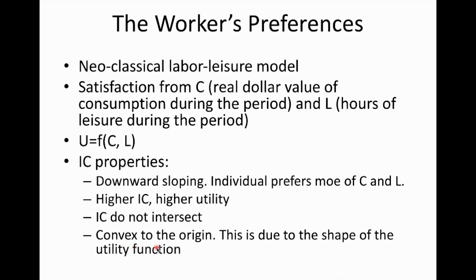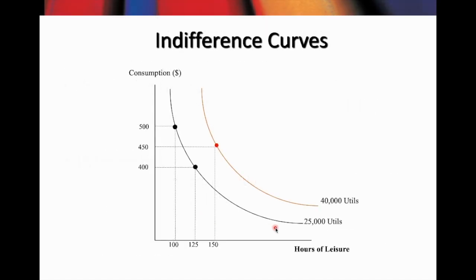The shape of the indifference curve is convex to the origin, due to the shape of the utility function. In the diagram, there are two indifference curves shown. Notice that whenever you draw a diagram you need a proper title and proper labels. On the vertical axis we measure consumption level in dollar value, and on the horizontal axis we measure the hours of leisure. The indifference curve is downward-sloping and convex.